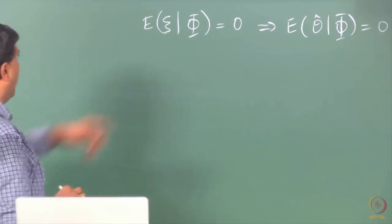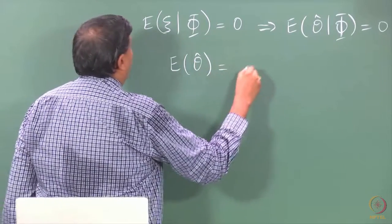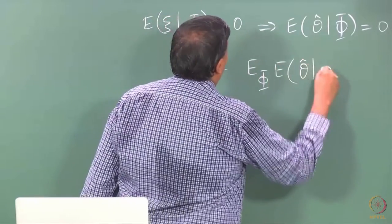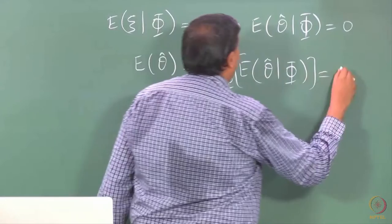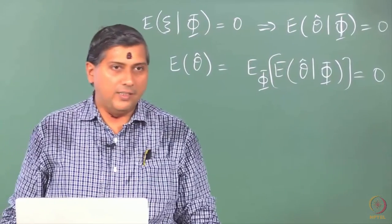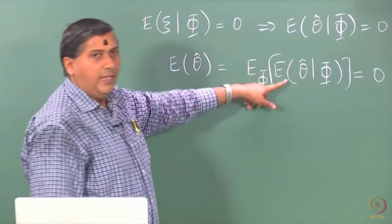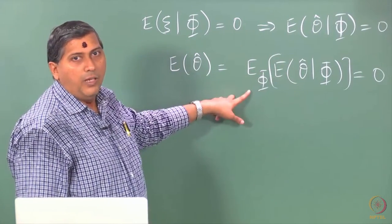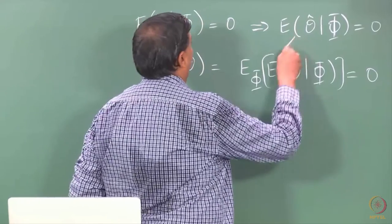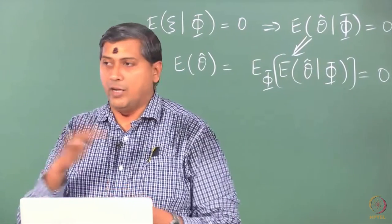The idea is that if this conditional expectation is zero, then one could show using iterative expectation. The iterative expectation essentially says: expectation of x is the expectation of the conditional expectation. The inner expectation is across z or theta hat, and the outer one is across phi. If the inner one is zero, then the total expectation will be zero — but not the other way around necessarily.